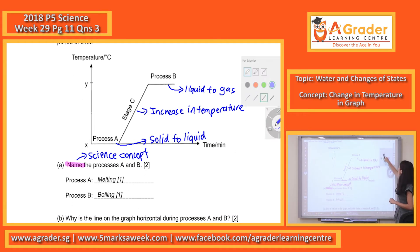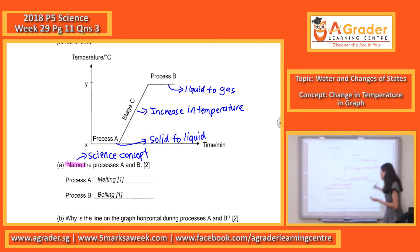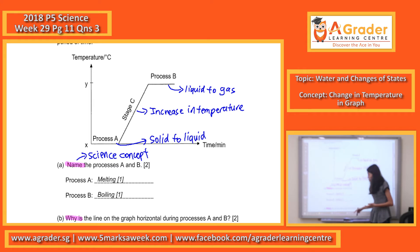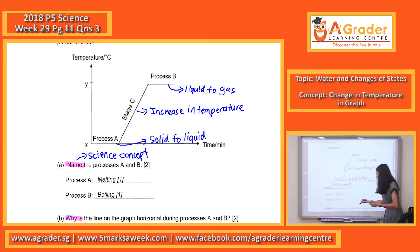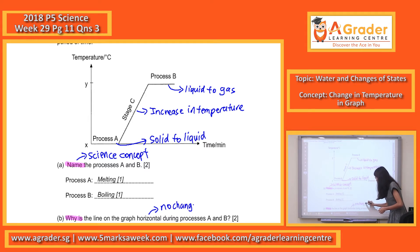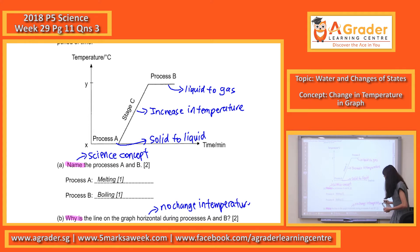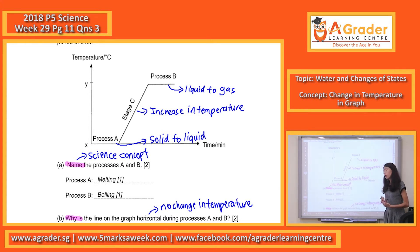Now let's look at part B. Part B is asking you basically why the line on the graph is horizontal during process A and B. Horizontal means that it indicates there is no change in temperature. So you have to mention why there is no change in temperature. By the way, there is heat gain — there is heat gain during melting and there is heat gain during boiling. But why is there no change in temperature?